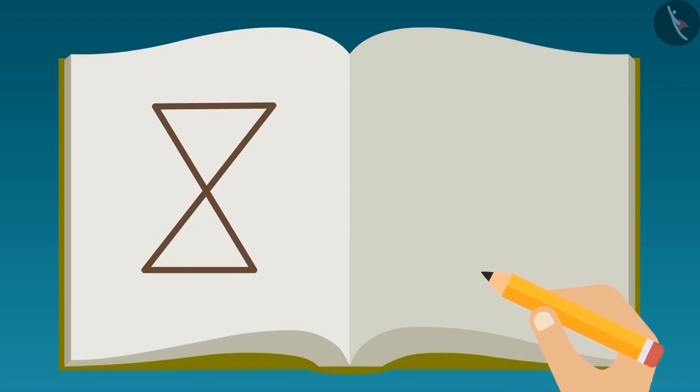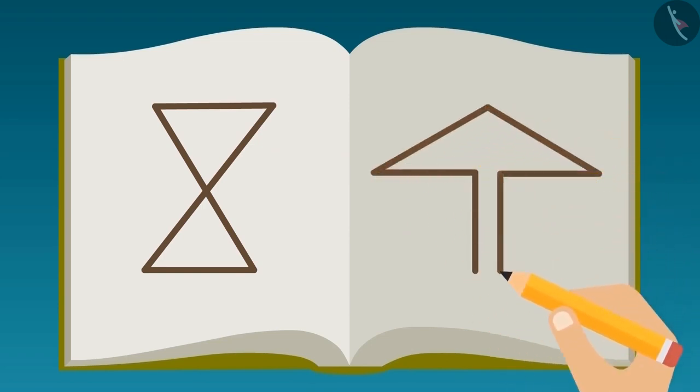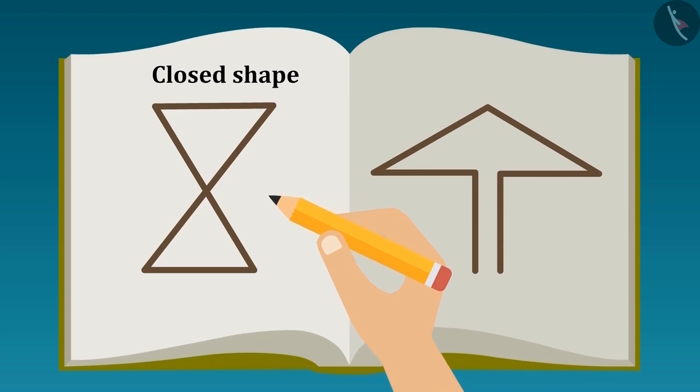But if I draw this shape, then the point where I am beginning to draw it is different from the point where I am ending it. That's why it is a closed shape and this is an open shape.